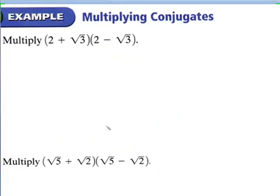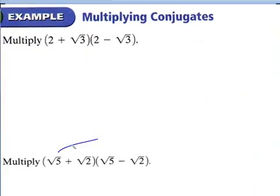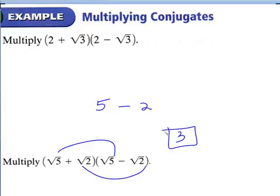When multiplying conjugates, remember from chapter 5 — you don't have to foil the whole thing. With conjugates, just multiply the first terms with each other and the last terms with each other. So 2 times 2 is 4; radical 3 times negative radical 3 gives negative 3, so your answer is 1. Over here, radical 5 times radical 5 gives 5; then the last terms give negative radical 2 times radical 2 equals negative 2, so the answer is 3.